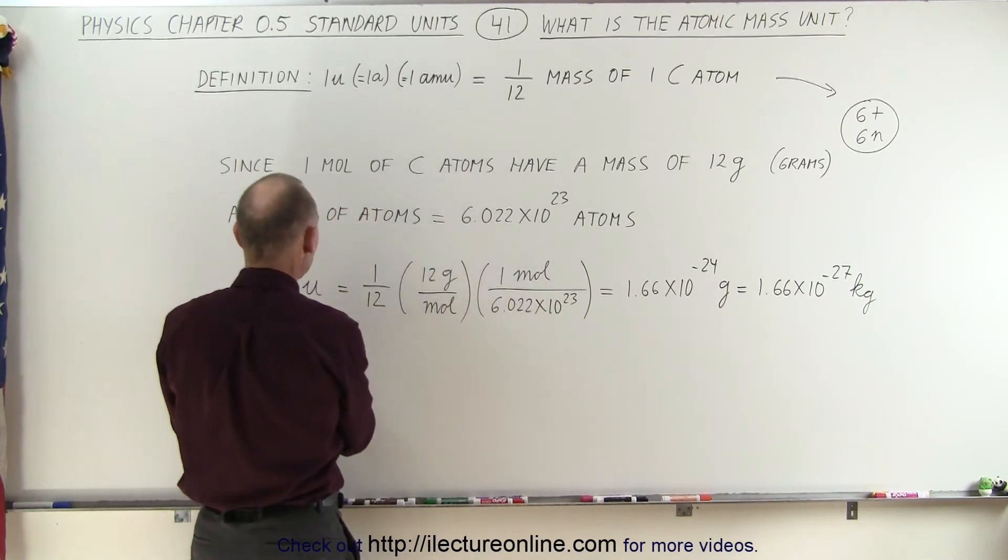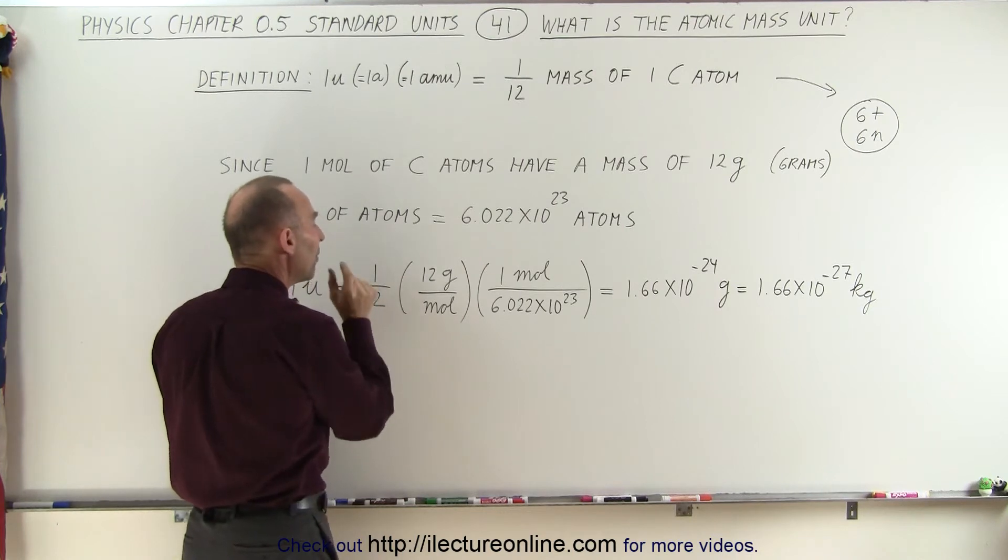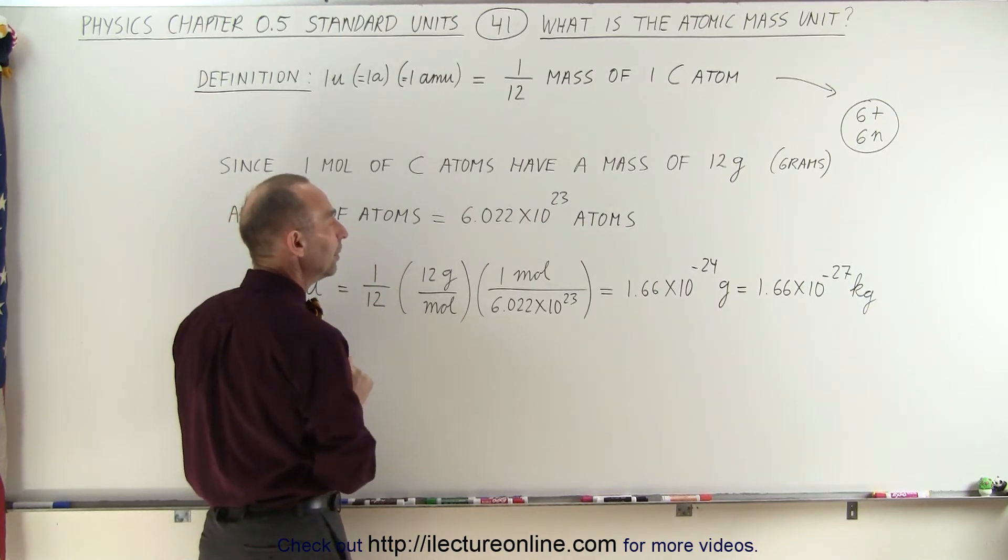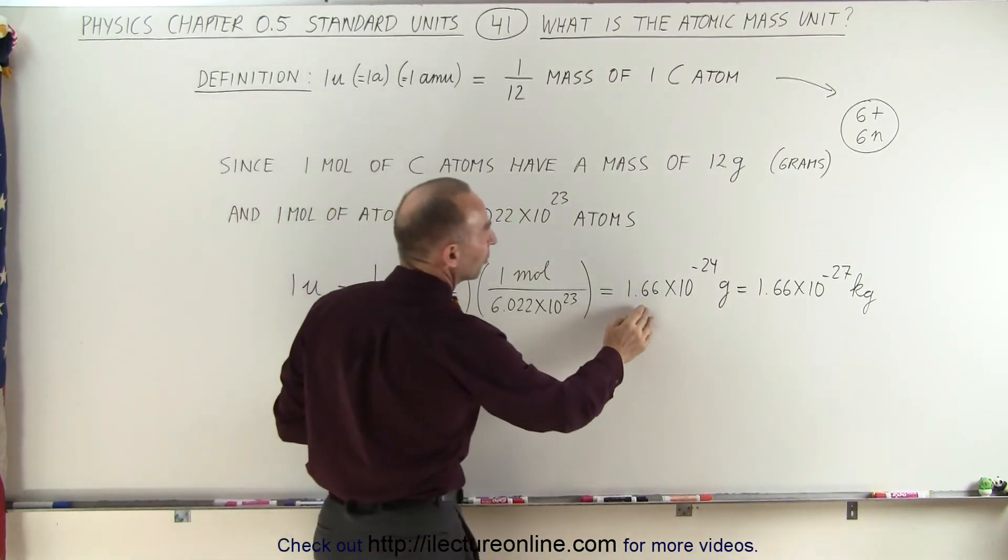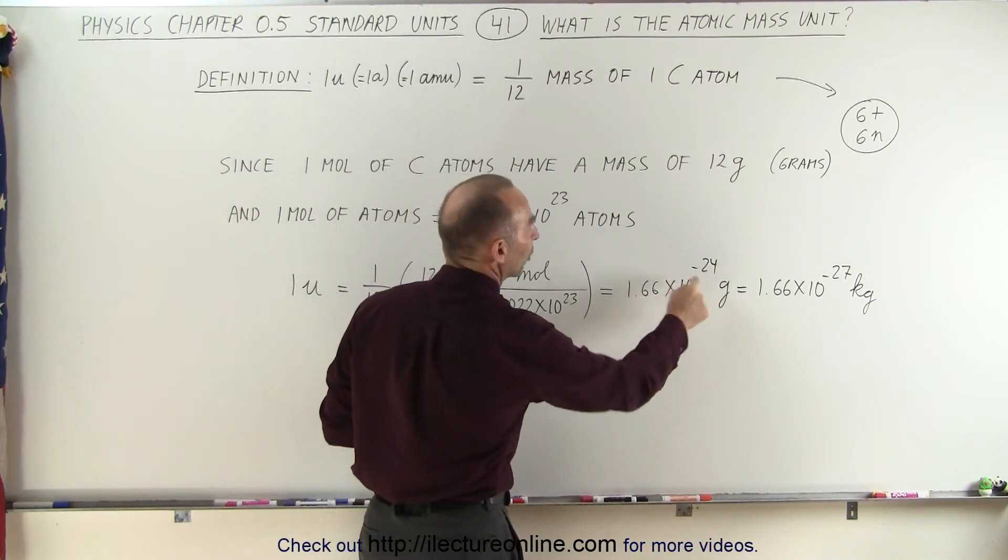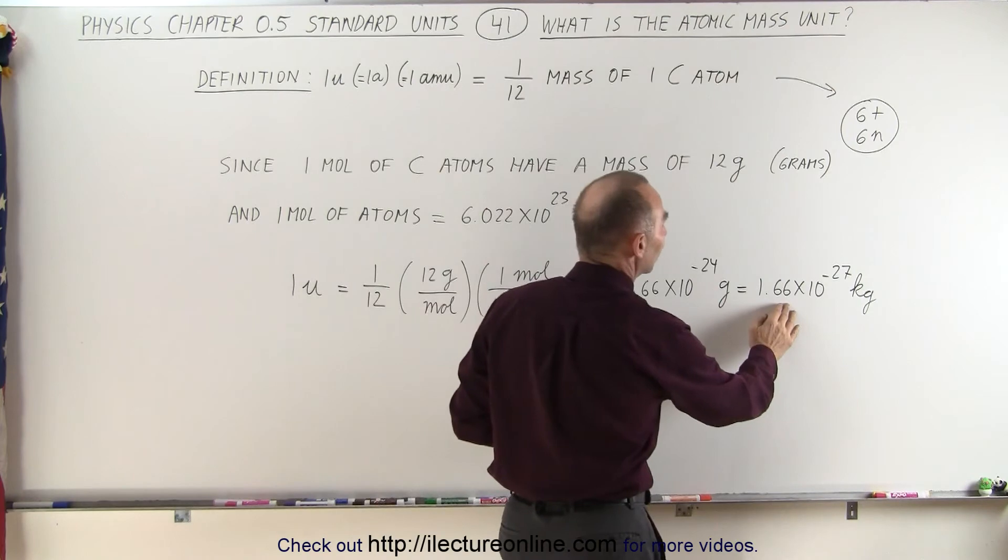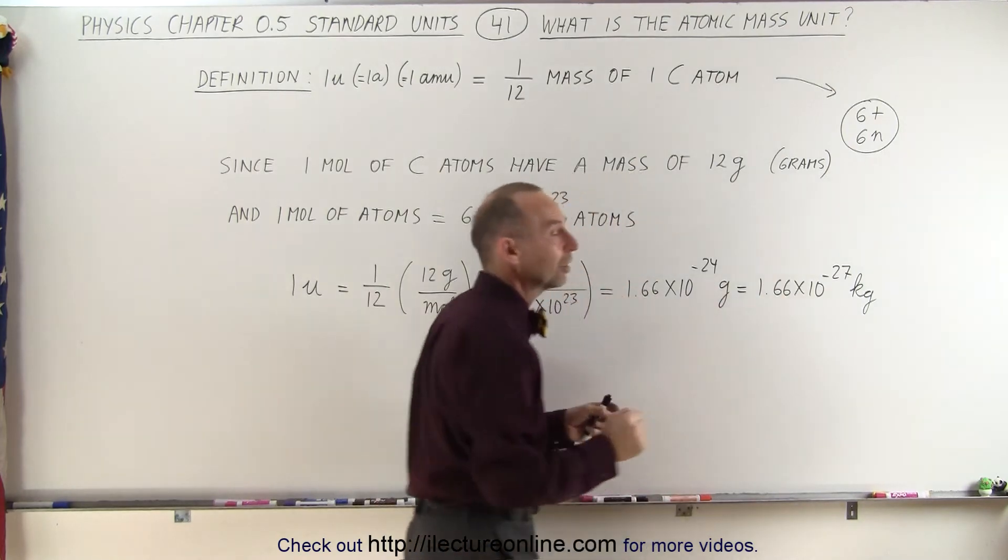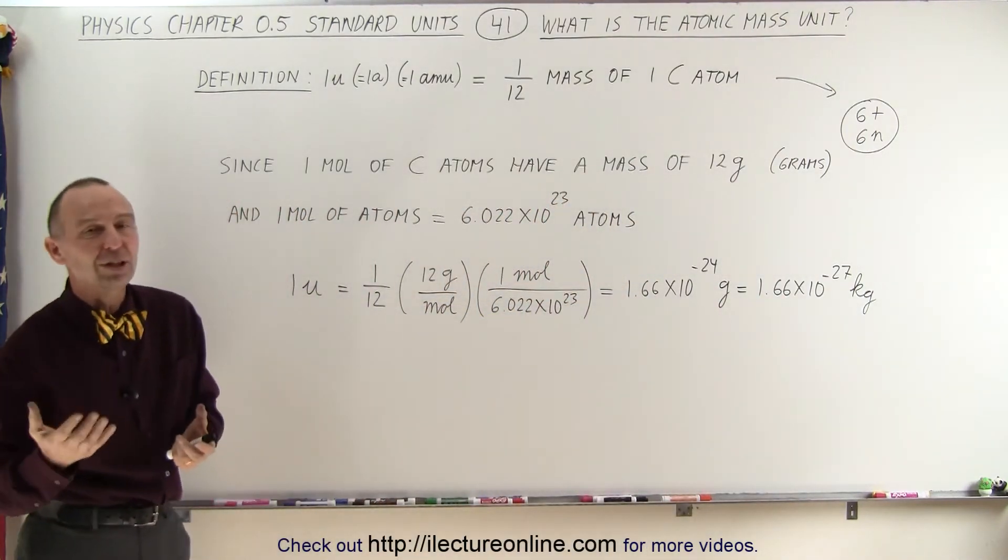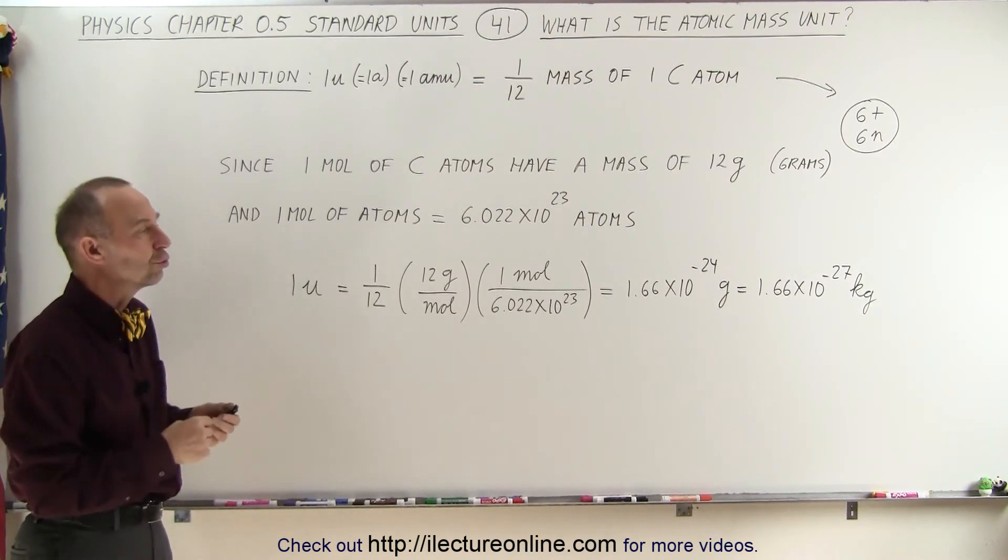We can then say that 1 atomic mass unit is 1 twelfth the mass of a single carbon atom, which means it's equal to 1.66 times 10 to the minus 24 grams, or in kilograms, it's equal to 1.66 times 10 to the minus 27 kilograms, which is roughly the mass of a single proton or a single neutron.